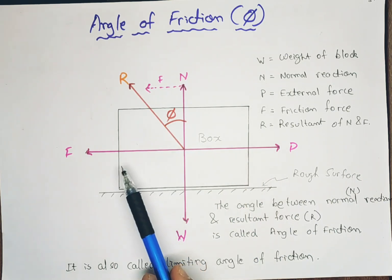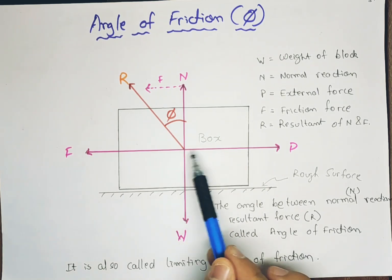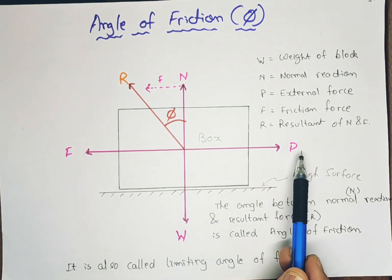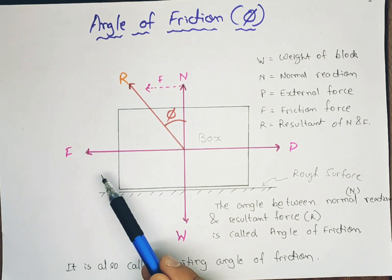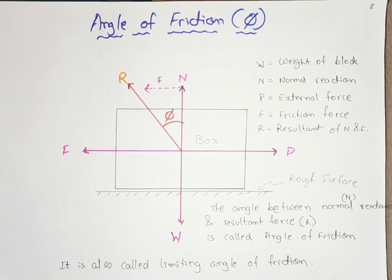So here three things become clear: that weight will act downwards, force will act right hand side, and so the frictional force will act on the left hand side. As per the discussion carried out earlier, friction force is always opposite to the external force.